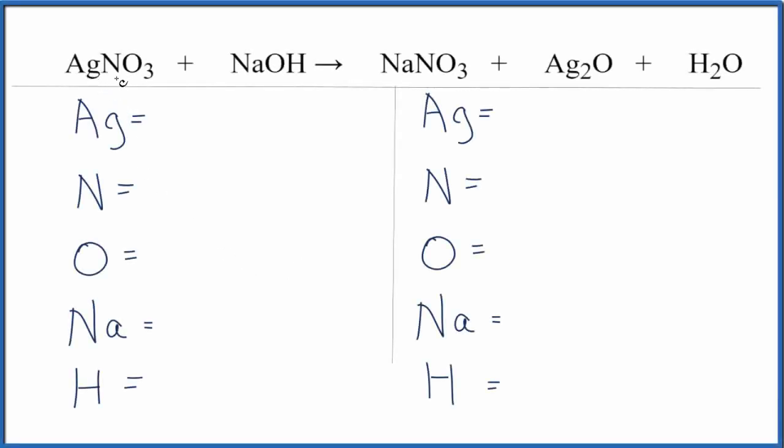In this reaction we have AgNO3, silver nitrate, plus NaOH, sodium hydroxide, and when they combine, we would actually get AgOH, but then that would break down into Ag2O, silver oxide, and water. So this is the equation that we'll balance in this video.